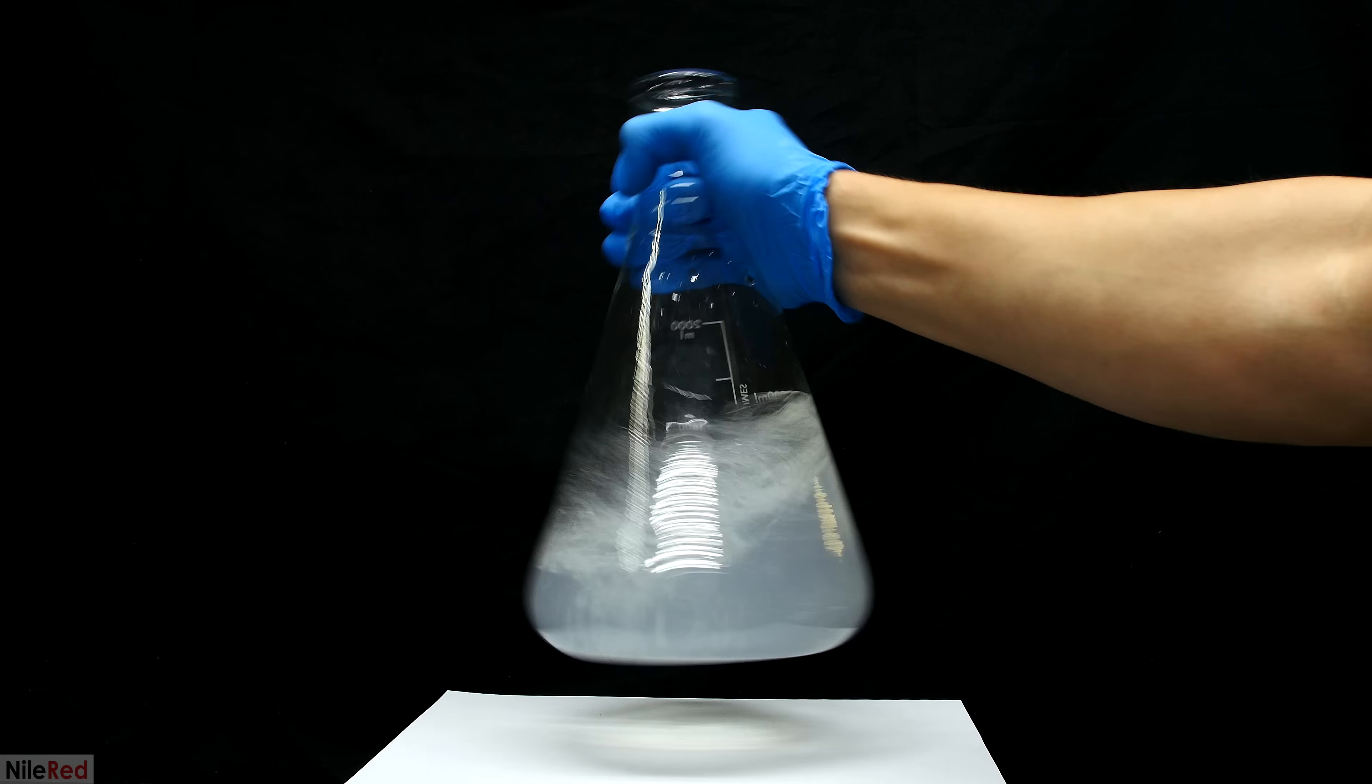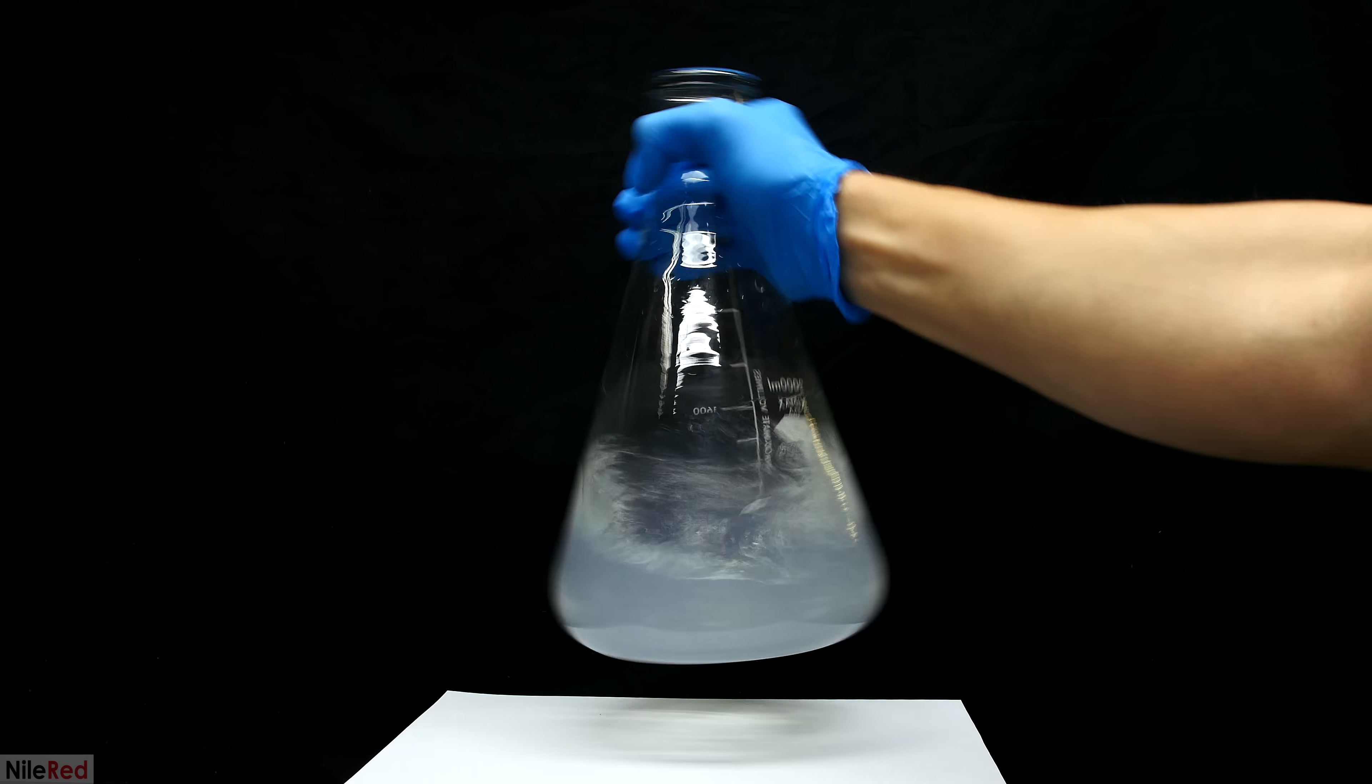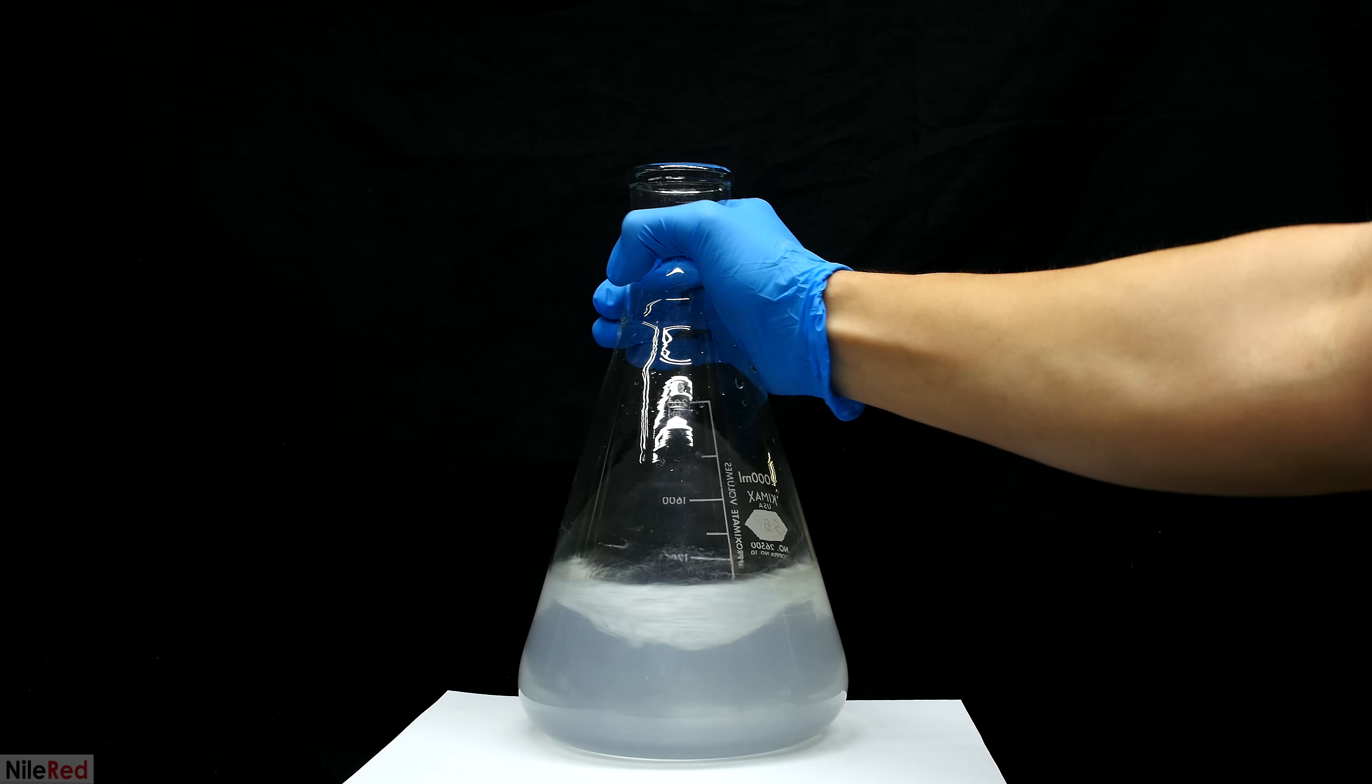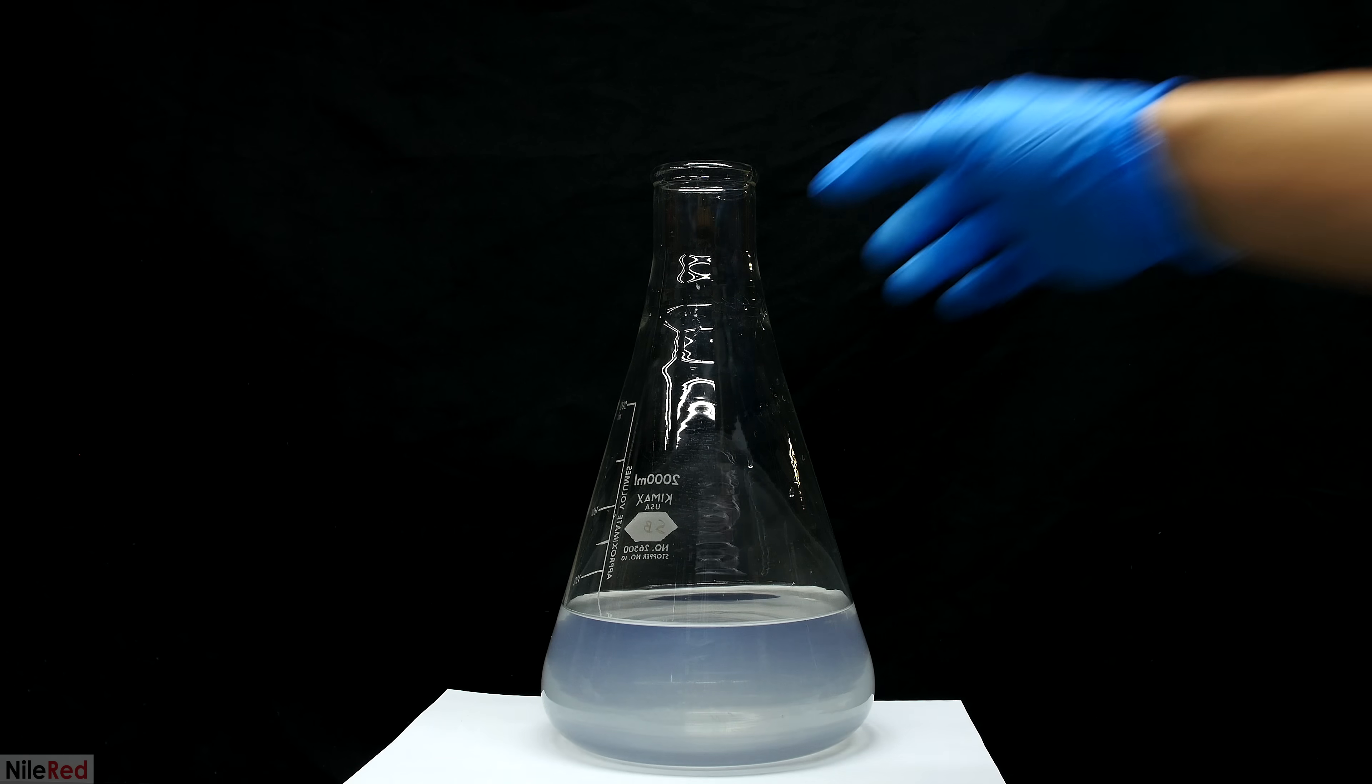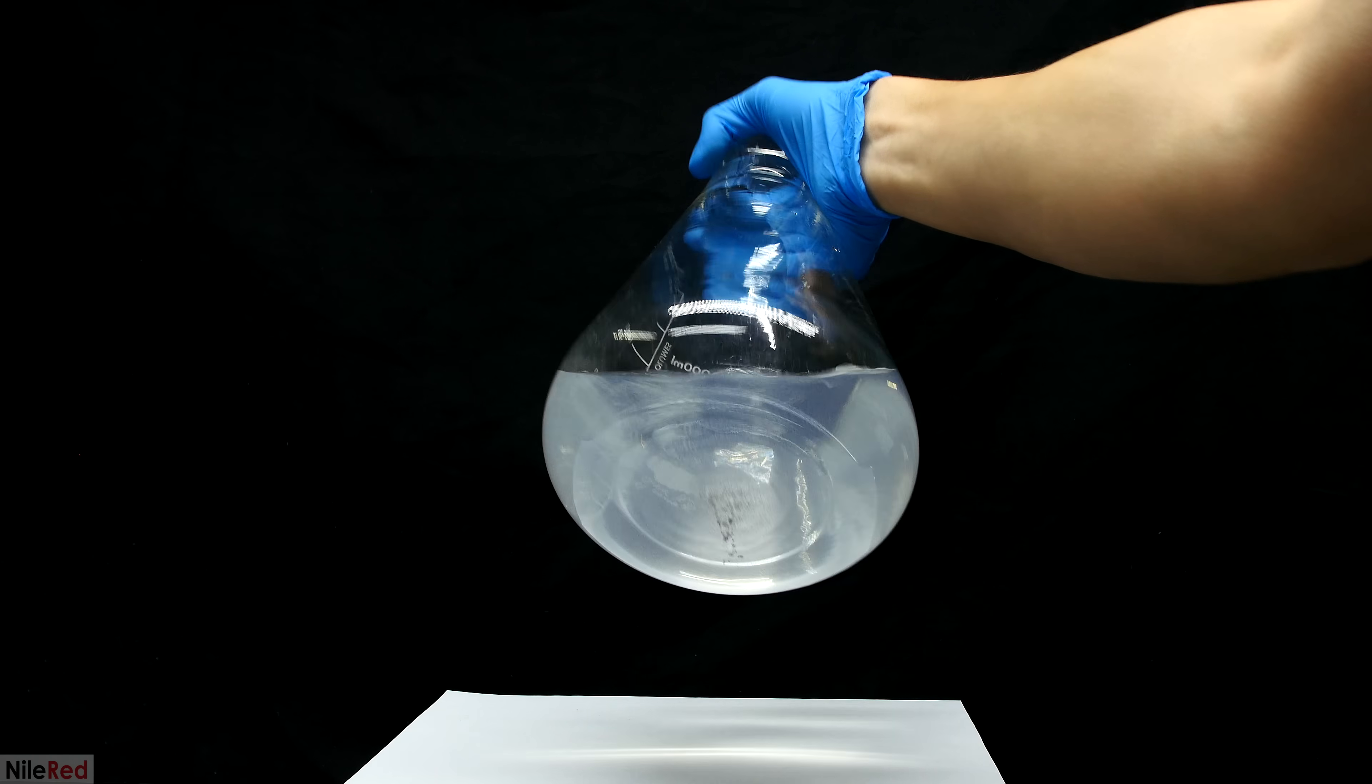On a serious note, silver nitrate tends to decompose back into metallic silver, and this is probably what's floating around. After letting it settle for a bit, I take a look at the bottom, and we can actually see some silver there.